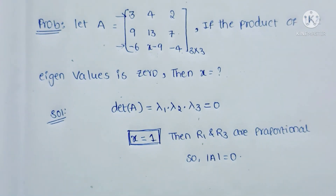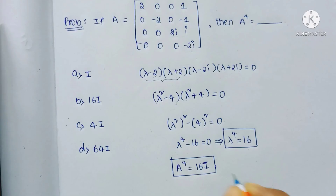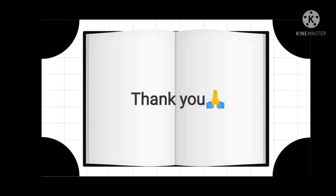If you want to verify, the determinant of matrix A will come out to 0. If you have any doubt, comment below. Until now we have completed the matrix part, and we will see a new topic in coming videos. Thanks for watching.